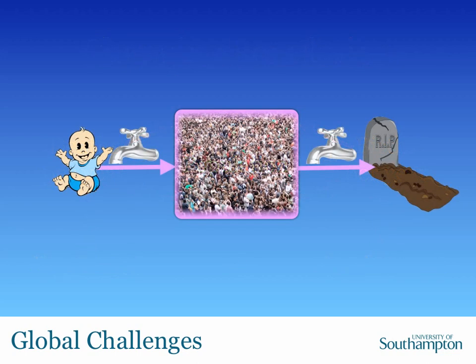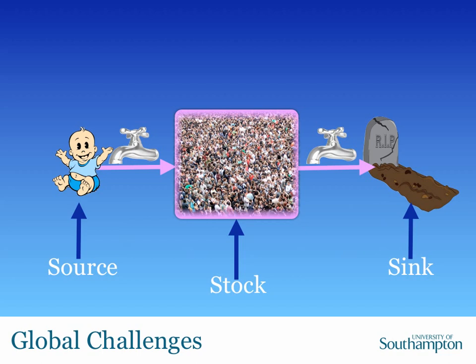Another way of looking at that process is a systems dynamics diagram — you've got a stock of something, and a stock is just an amount. In this instance it's the number of people, the global or local population. That stock is affected in two ways: there's a source with stuff coming in, and a sink with stuff going out. The things coming in are babies, and the things going out are dead people. The little taps represent the fact that the inflow into the stock and the outflow out of the stock are subject to control, or at least they can change.